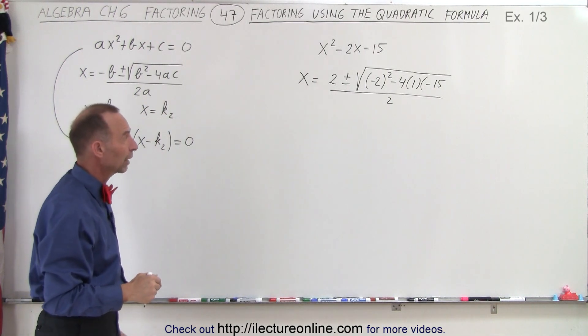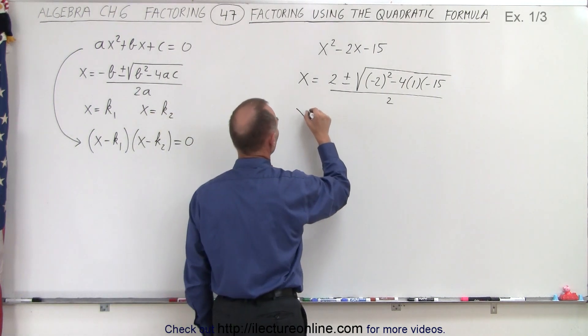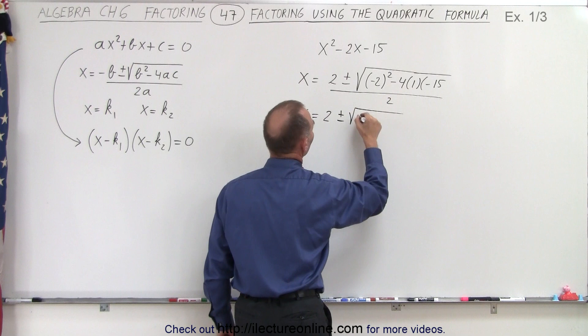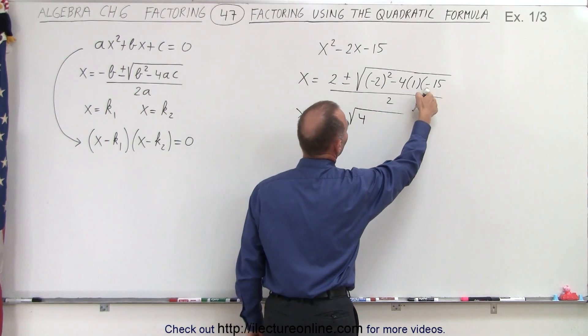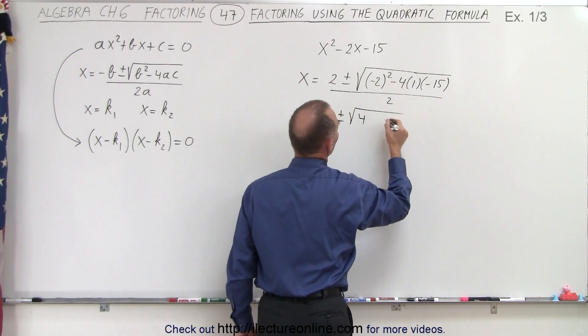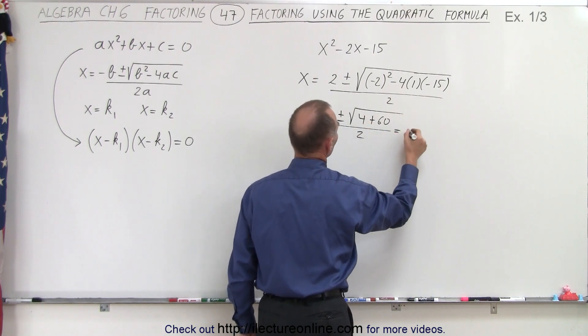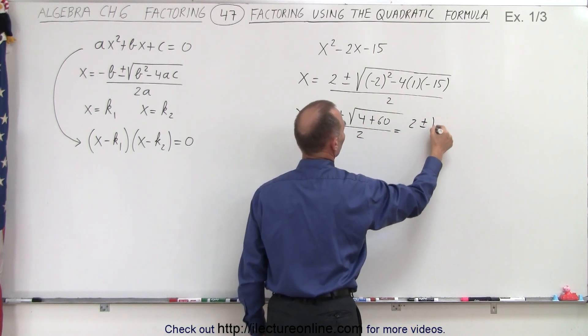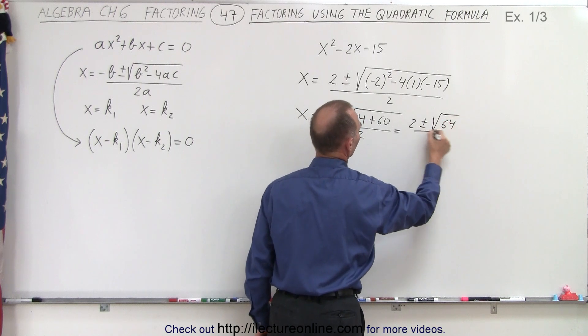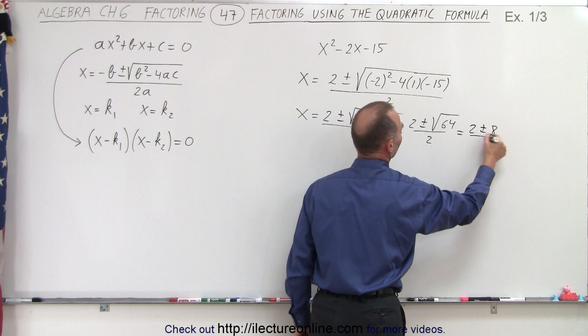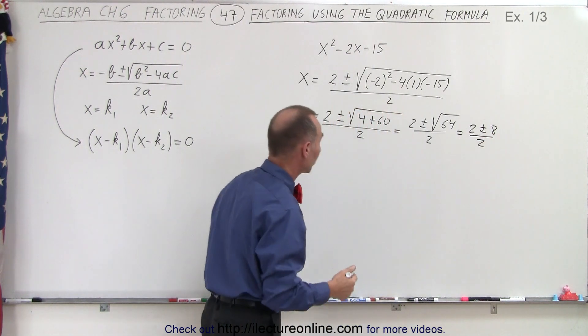So x is equal to 2 ± √(4 - times a minus is plus, and that would be plus 60), all divided by 2, which is equal to 2 ± √64, divided by 2, which is equal to 2 ± 8, divided by 2, which means we're going to get two possible results.